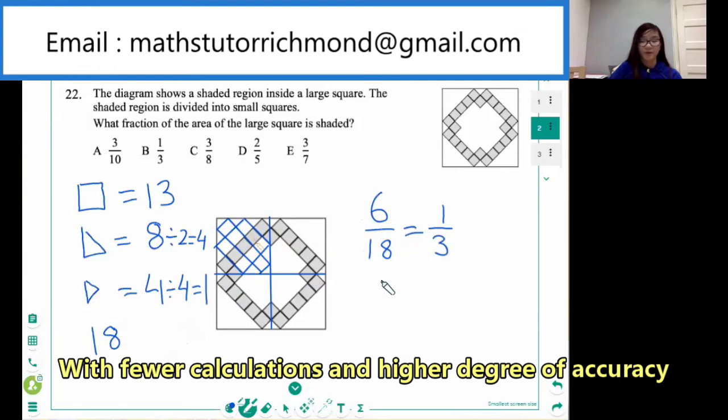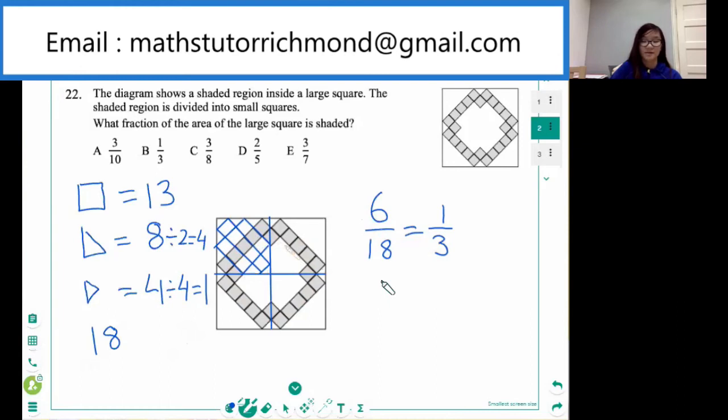So one third would be equivalent to the entire square because each corner, each quarter is identical, it's going to be the same in each of them. So if we take the whole square, it would still be a third. So the answer is B.